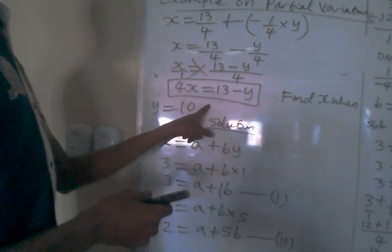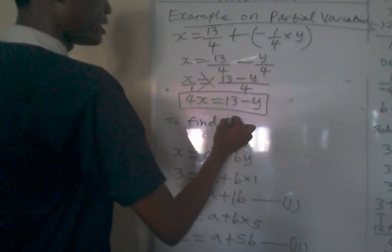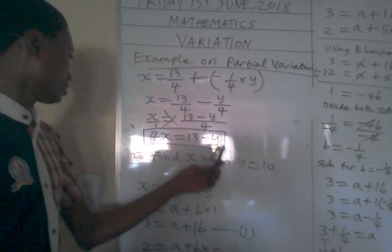It means 4x equals 13 minus y. Now we can pick this one as the equation that connects them, or we can leave it, but it's better to use this so that by the time we are solving it further to find x when y is equal to 10, we can continue.